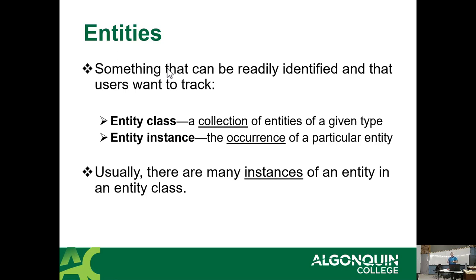One of the fun things about all this terminology is that when you talk about an entity class, it is often just called an entity — rarely do we use the word class. An entity instance, on the other hand, is a thing unto itself — an occurrence of a particular entity. There are usually many instances of an entity in a class. For example, the college has an entity called student, and each of you are an instance of a student entity.